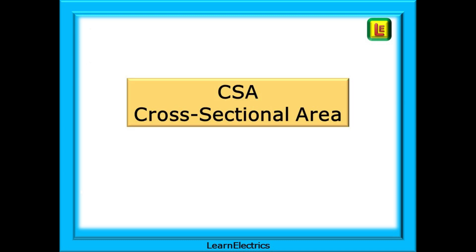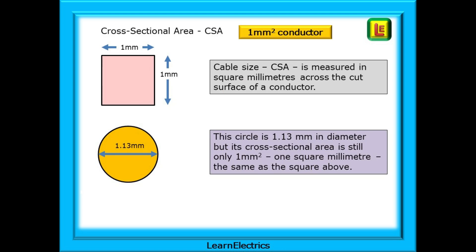The first thing we need to know about our cable is the cross-sectional area or CSA so let's make sure of what this is. Cable size or CSA is measured in square millimeters across the cut surface of a conductor. So what size is a one square millimeter conductor? If this was a square conductor it would be one millimeter on each side. But conductors are round and this circle is 1.13 millimeters in diameter but its cross-sectional area is still only one square millimeter.